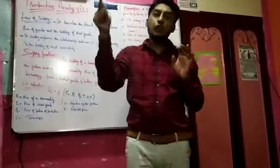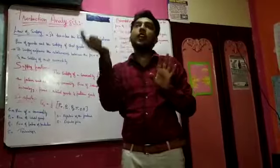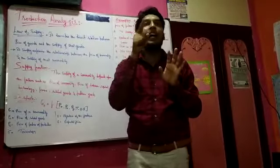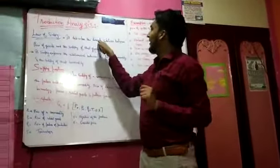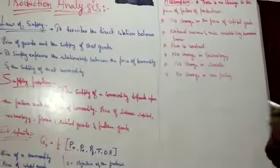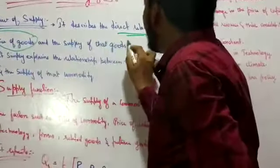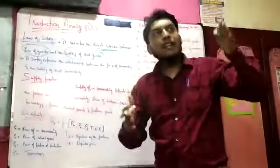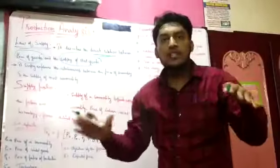Simply understand that you are the owner of the business. For example, you are doing the hotel industry business. When your rate for the food is high, the profit will be high for you. So that's why it is the direct relation — it is the direct relation between price of goods and supply of goods. When the price goes up, supply goes up. When price goes down, supply goes down.